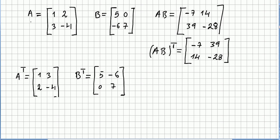We have now in this video matrix A that's 1, 2, 3, -4 and we have matrix B: 5, 0, -6, 7.